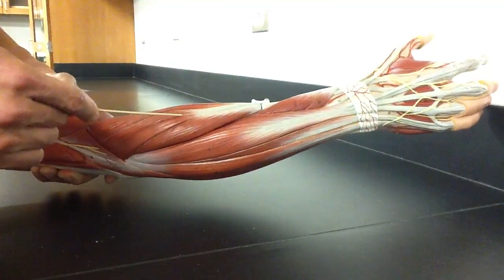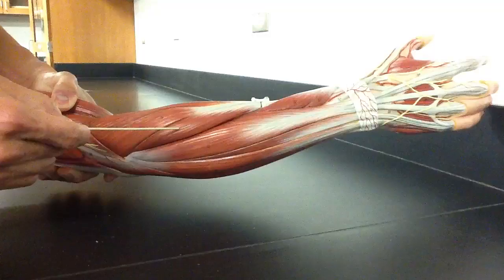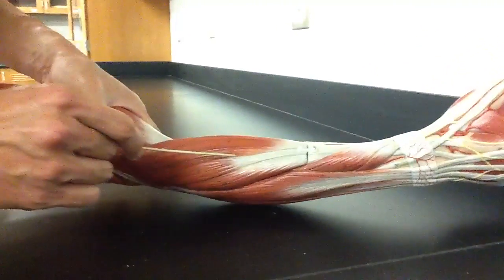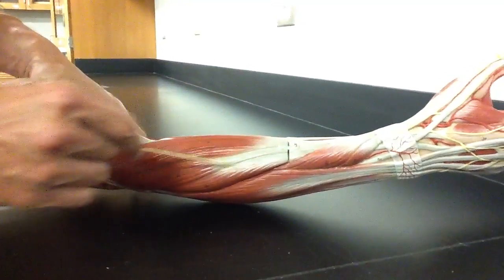This is called the extensor carpi radialis. But there's another extensor carpi radialis, but that's why we call it the extensor carpi radialis brevis, as compared to this one, the extensor carpi radialis longus. As you can see, the tendon tends to be longer.